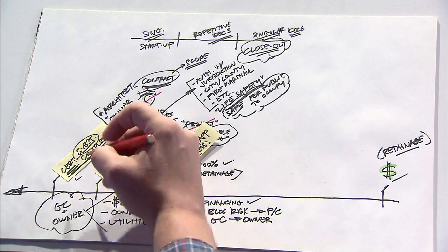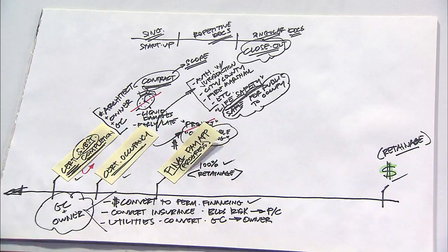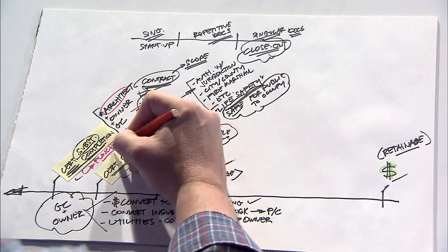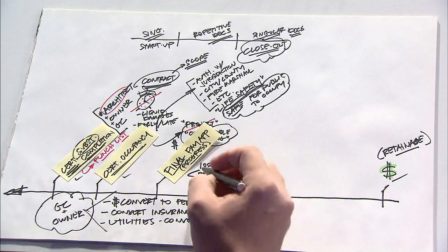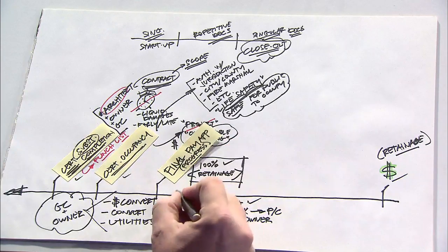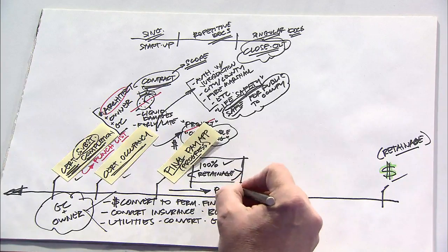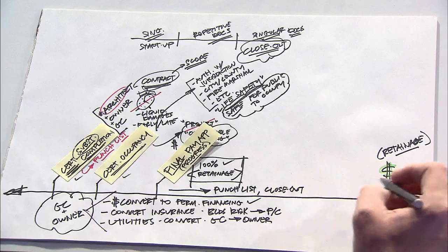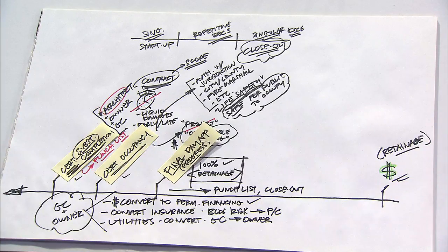One of the things that happens as a function of the Certificate of Substantial Completion being issued is the architect would also produce a punch list. And then from the time the contractor bills for 100% of progress minus retainage, then his task is basically to complete the punch list and provide closeout. All of which would be necessary to receive the final retainage payment.